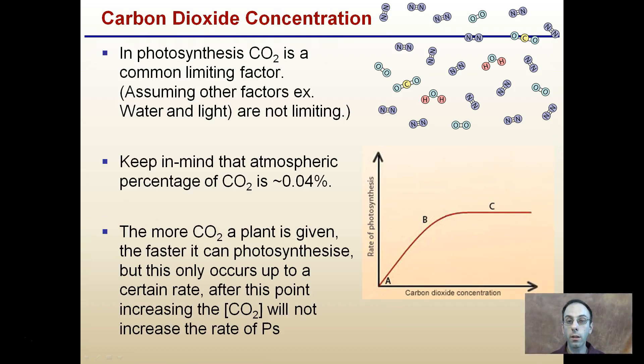Carbon dioxide concentration is another consideration. It can help limit or potentially limit plant growth. So carbon dioxide is a common limiting factor, assuming all other factors, example water and lighting are not limiting. So all these limiting factors assume that they're the most limiting amongst all of the other factors. Keep in mind that the atmospheric percentage of carbon dioxide is only about 0.04%. The more carbon dioxide a plant is given, the faster it can photosynthesize. But this only occurs up to a certain rate, as we see here again. Increasing the carbon dioxide concentration will not increase the rate of photosynthesis beyond that point.